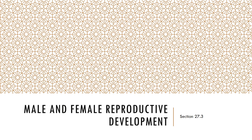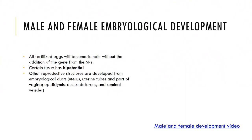In the final section, we look at male and female reproductive development. All fertilized eggs will become female; with the addition of the SRY gene, certain tissue has bi-potential. Other reproductive structures are developed from embryological ducts, such as the uterus, uterine tubes, parts of the vagina, epididymis, ductus deferens, and seminal vesicles. A video is available showing further development of the male or female reproductive tracts.